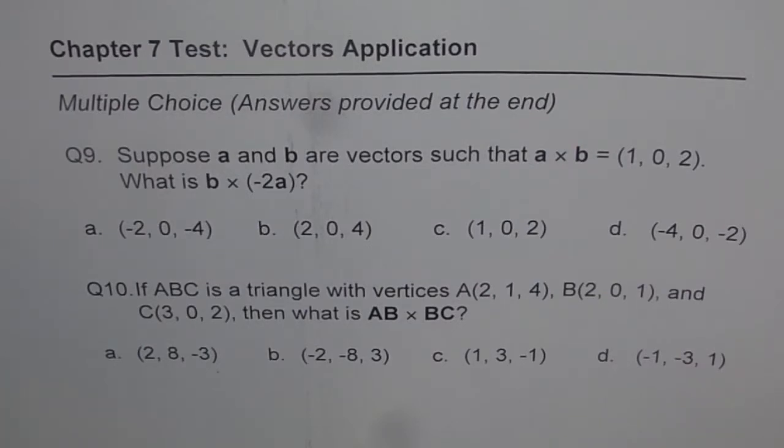Choice A is (-2, 0, -4). Choice B is (2, 0, 4). C is (1, 0, 2). And D is (-4, 0, -2).